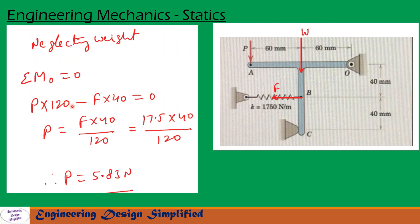From this we can write P equals F into 40 by 120, that is 17.5 into 40 by 120. So P, the load P required to break the contact when weight is not considered, is equal to 5.83 newton.